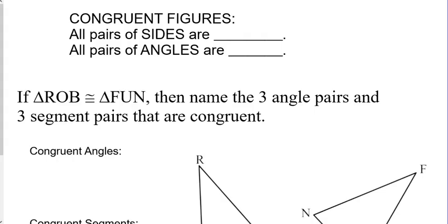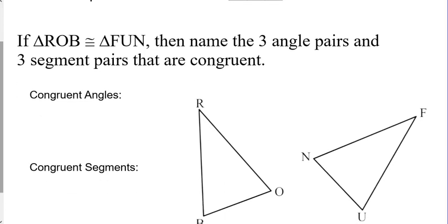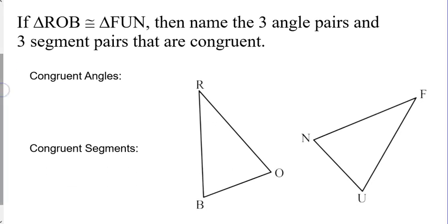Congruent figures. All pairs of sides are equal, and all pairs of angles are equal. They're congruent. They're the same. So, if triangle ROB and FUN are congruent, then name the three angle pairs and three segment pairs that are congruent. Here's a trick.